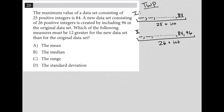The first answer choice is the mean. We would calculate the mean by adding up all 25 terms in data set one and dividing by 25, then comparing that to adding up all 26 terms in data set two and dividing by 26. The only difference between data set one and two is the 96. So the sum of data set two will be 96 higher than data set one, but we have to divide by 26 — so adding 96 and dividing by 26 will not get us to 12 greater for data set two.